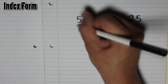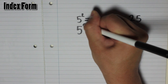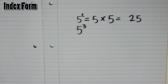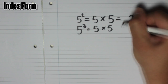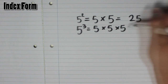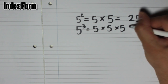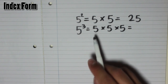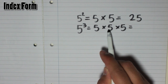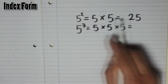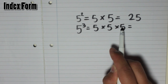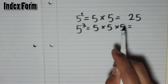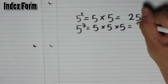Now let's say we had 5 with a 3 on it. That means 5 cubed, which is 5 times 5 times 5. If we work that out: 5 times 5 is 25, as we just worked out, and then 25 times 5 is 125.